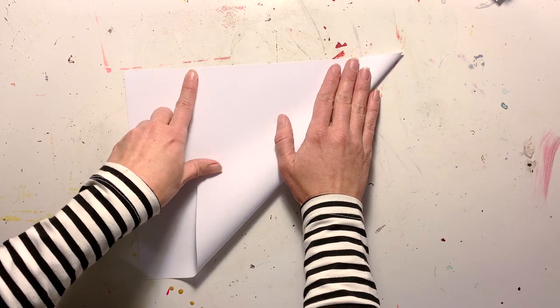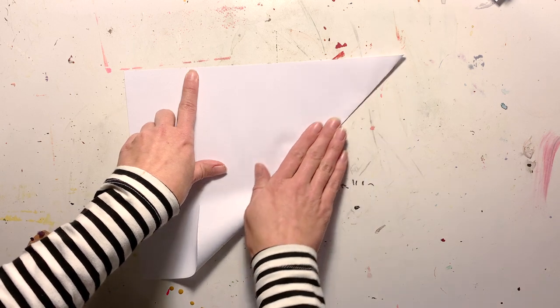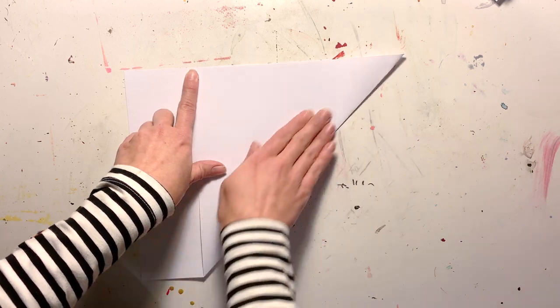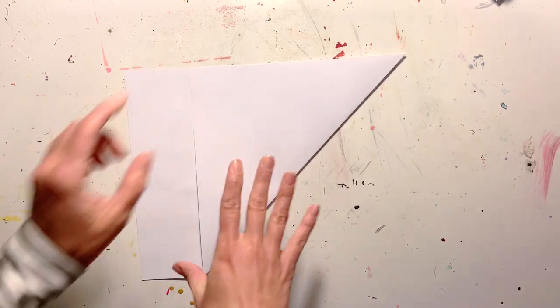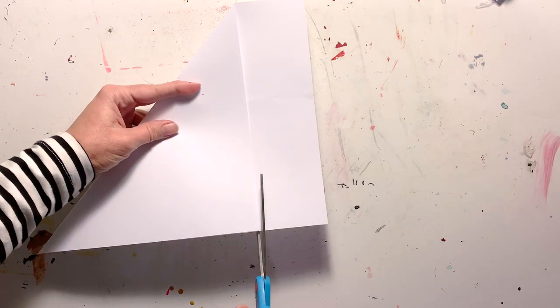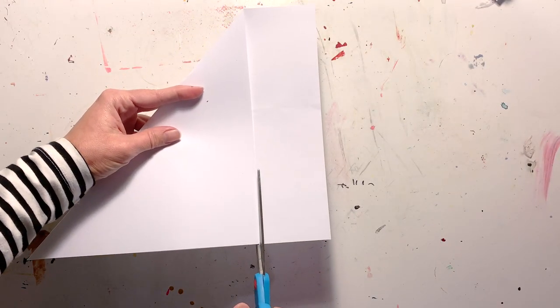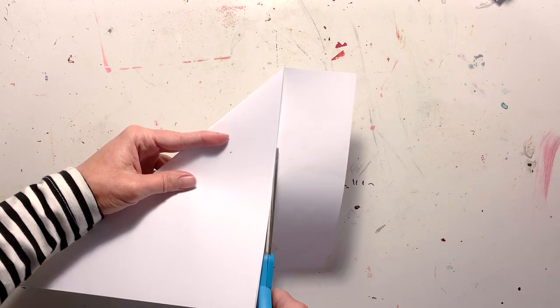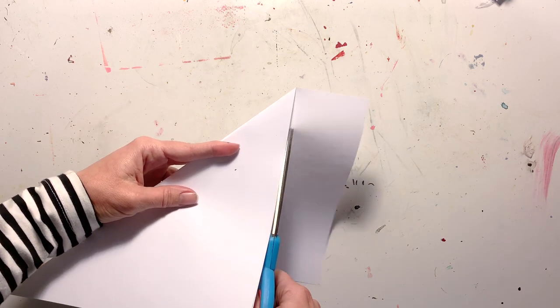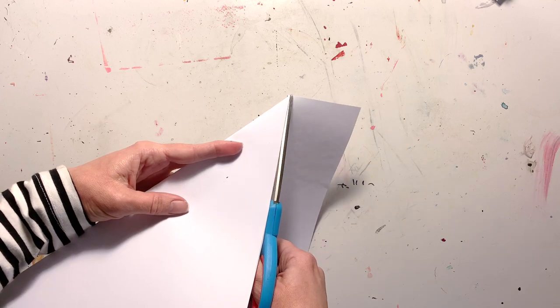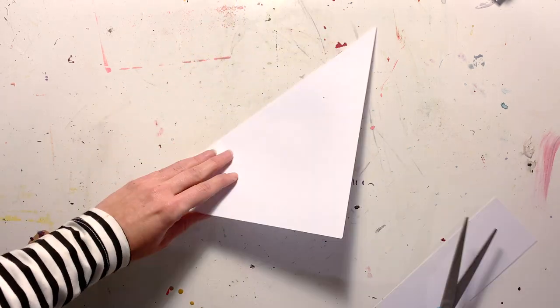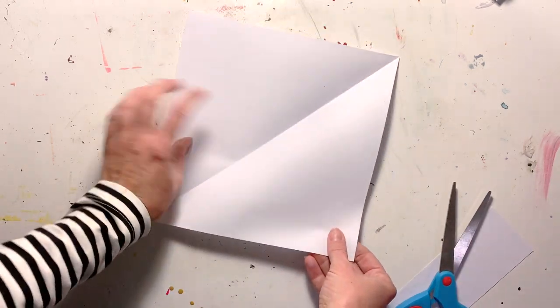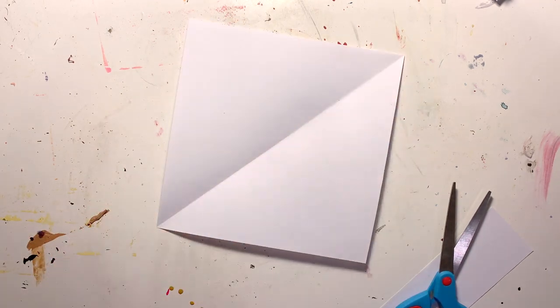And once I have them pretty much lined up, I'm going to fold along that diagonal fold. And then I'm going to grab my scissors. I'm going to cut along that edge. So I'm cutting off an extra little strip of paper on the side. And when I open it up, I am left with my wonderful square sheet of paper.